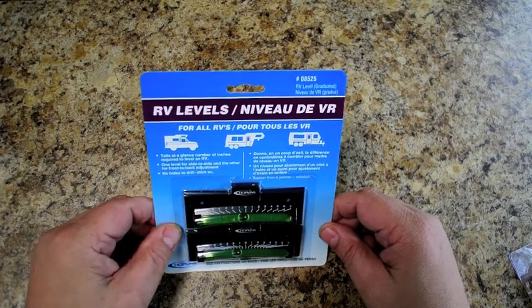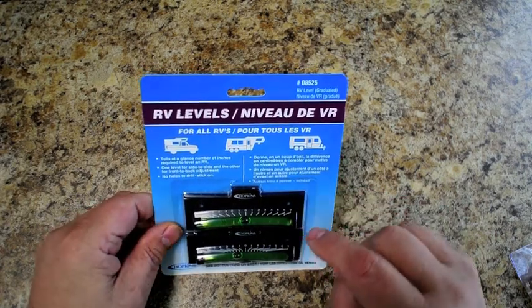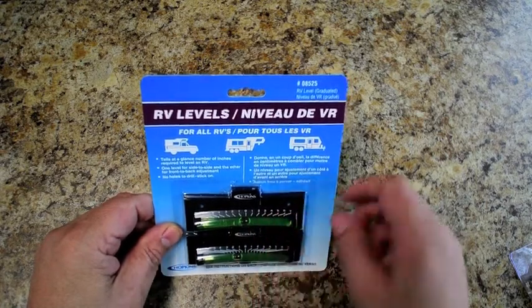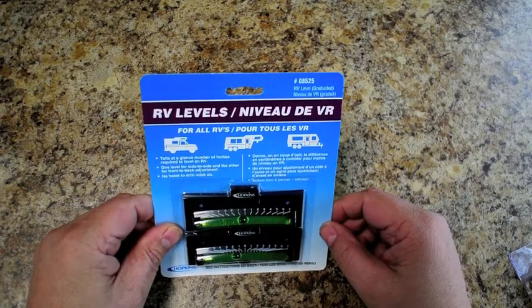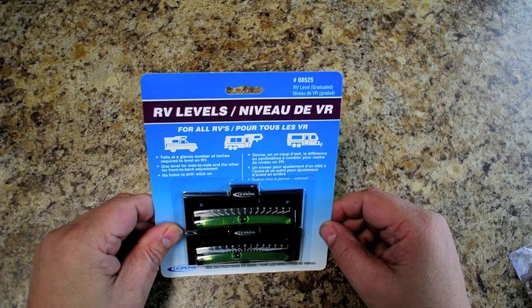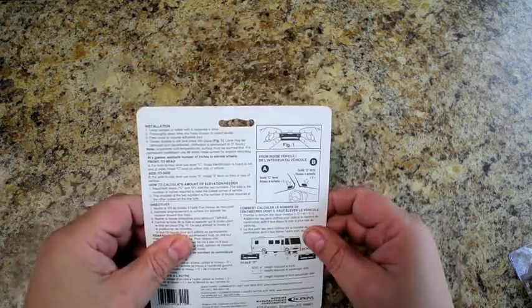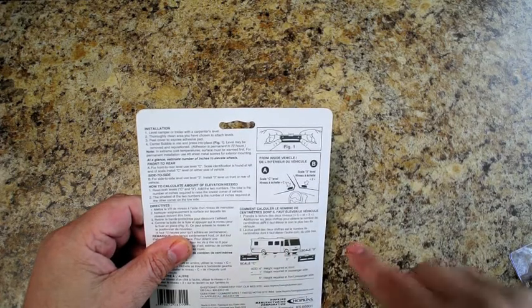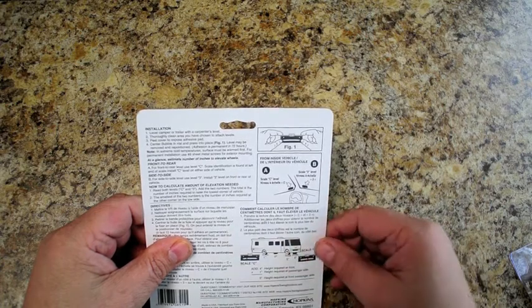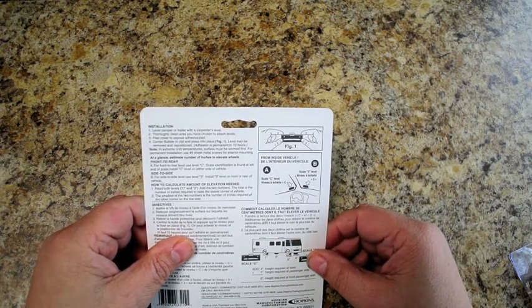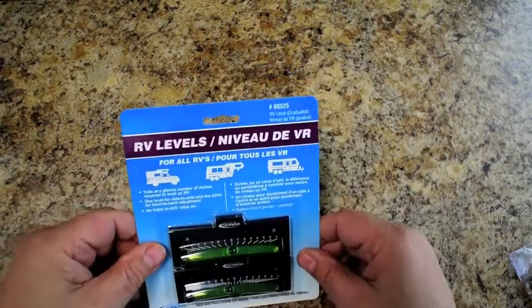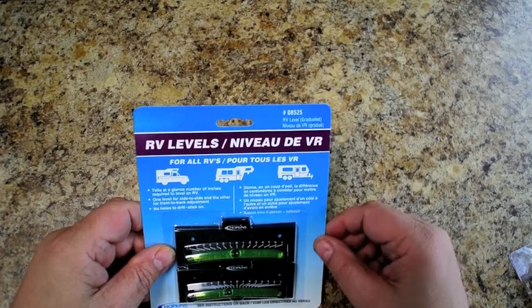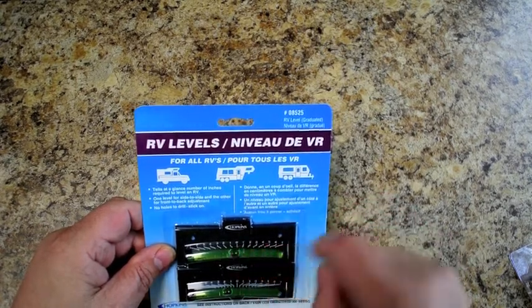Well, anybody that knows basic trigonometry knows that the angle, which is what this is actually measuring, is dependent upon the distance the measuring point is from the fulcrum. On the back here, it shows that you can put the scale mounted anywhere along the side of the coach and the front scale anywhere along the front of the coach. Now the problem is that unless you know where the fulcrum point is in conjunction with the measuring point, then this scale can't be correct.